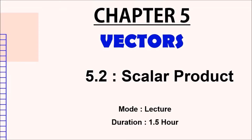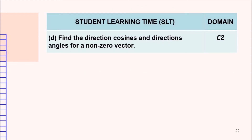Now, let us proceed with the next subtopic on our chapter, which is 5.2 on Scalar Product. The learning objective for today's lesson is to find the direction cosines and direction angles for a non-zero vector.